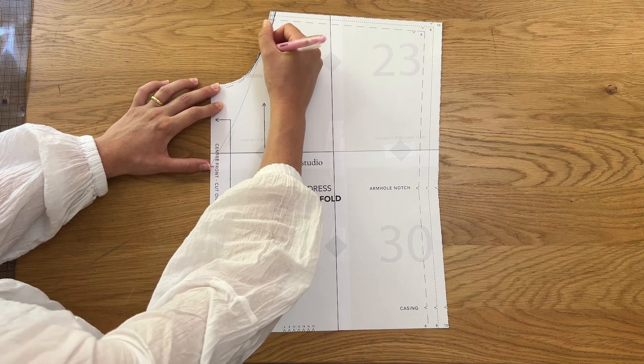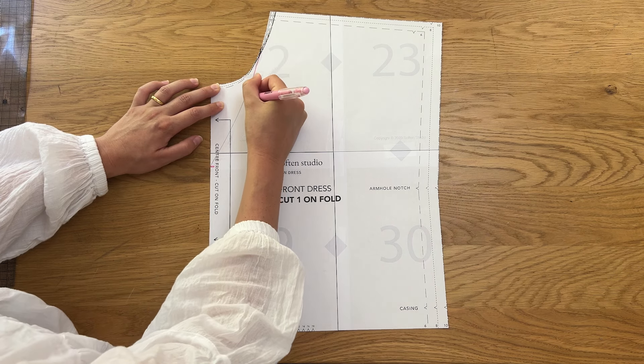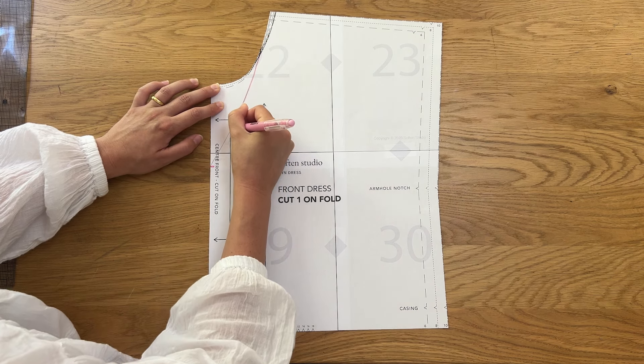Starting at the top shoulder seam, redraw the neckline that finishes at this new mark. The line should have a subtle curve as you draw it.